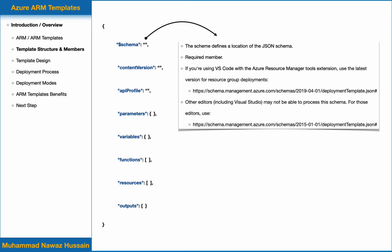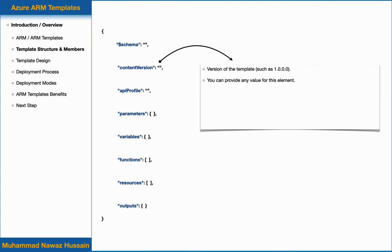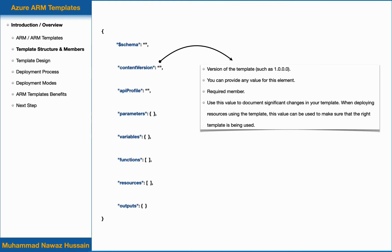For those editors, you can use the older version. The next member is content version — this is a version of the template such as 1.0.0.0, but you can provide any value for this element. It is a required member, so you always have to include it, though Azure does not use this value. You can use it to document significant changes in your template and to make sure the right template is being used when applying resources.